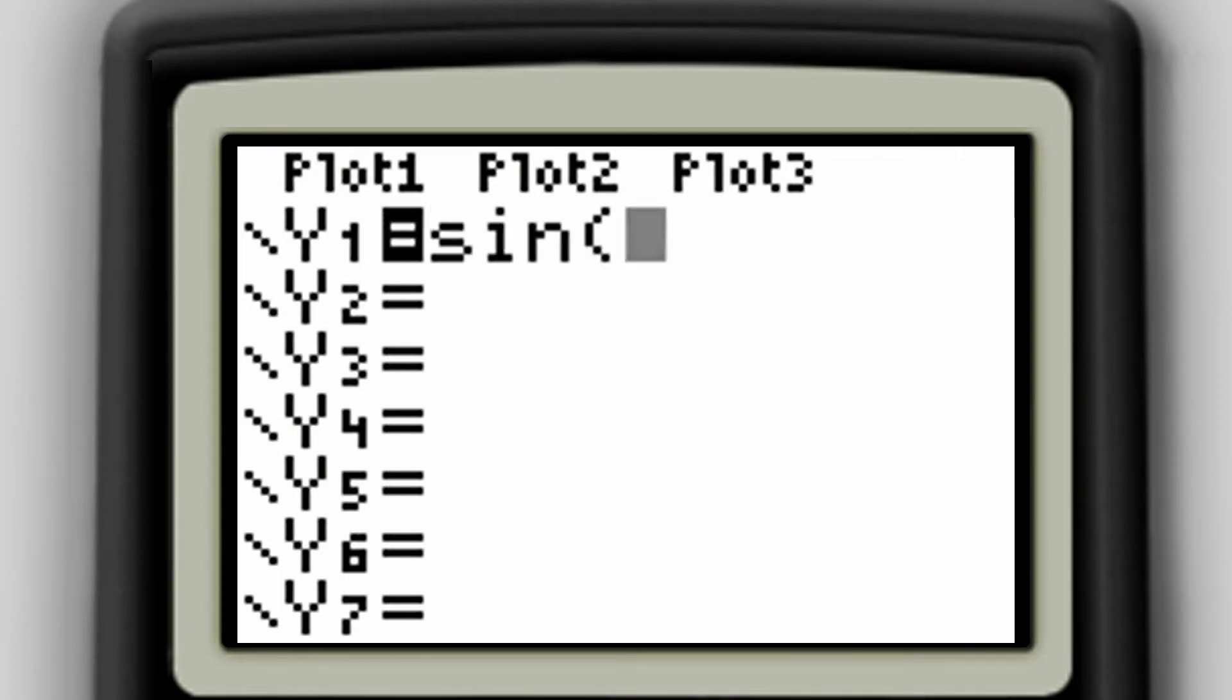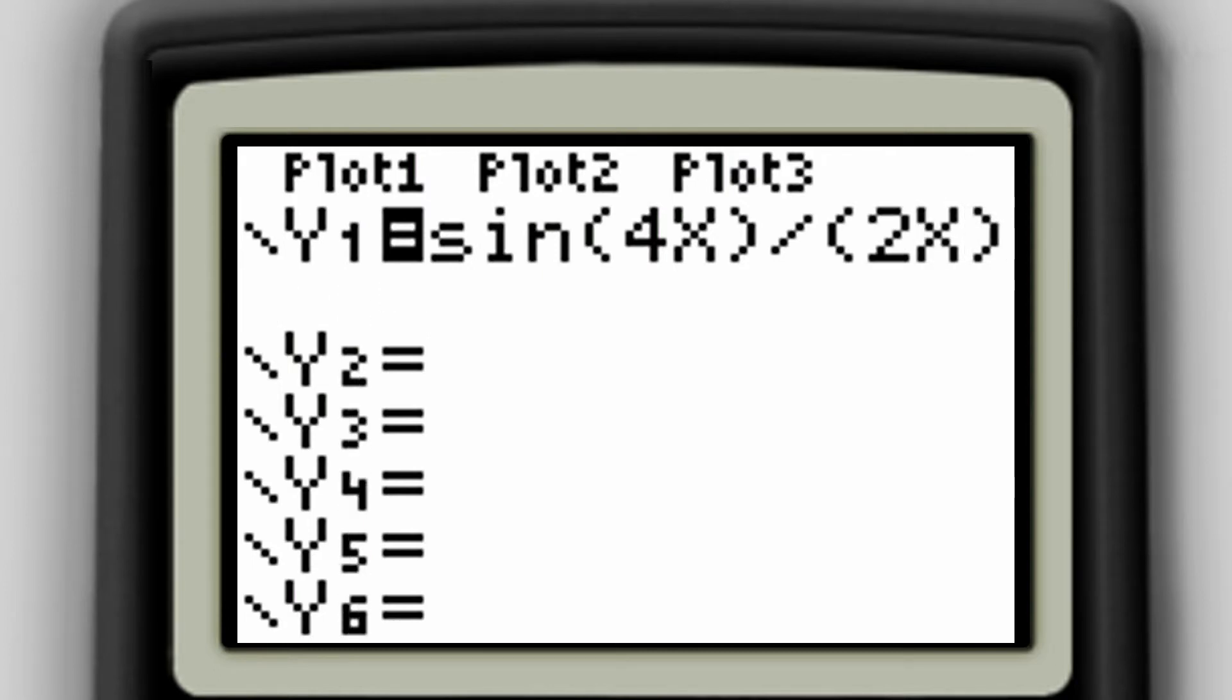So I have the sine of 4x divided by 2x. And then I'm going to graph it.